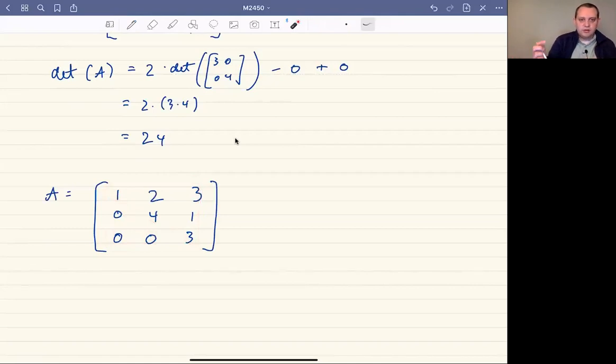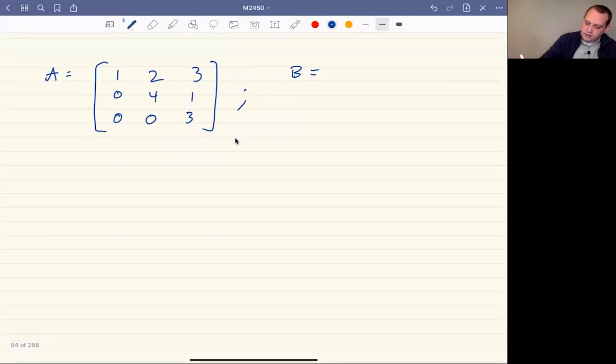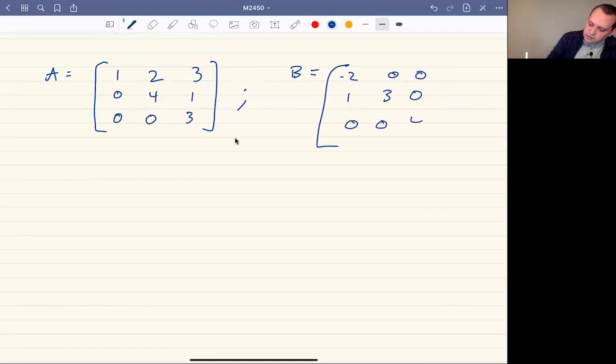There's also the corresponding idea of a lower triangular matrix. You could have, let's call it something different—say [-2, 0, 0; 1, 3, 0; 0, 0, 4].